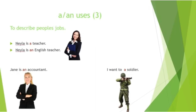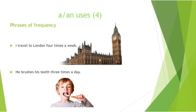The third use of 'a' and 'an' is to describe a person's job. 'Nila is a teacher' — we use the indefinite article to describe jobs. 'Nila is an English teacher' — we use 'an' here because 'English' begins with a vowel sound. 'Jane is an accountant.' 'I want to be a soldier.' Every time we refer to a person's job, we use the indefinite article 'a' or 'an'.